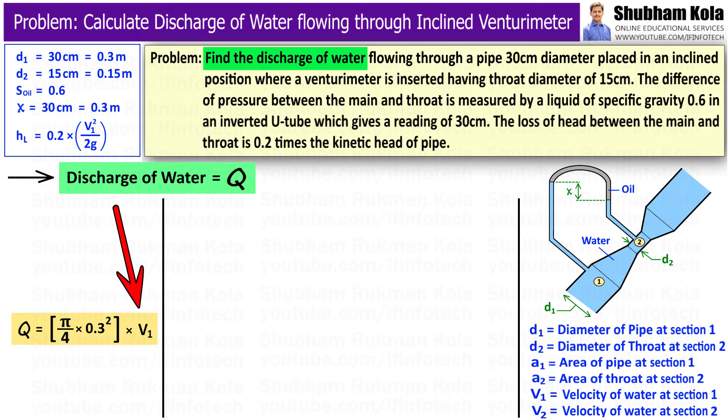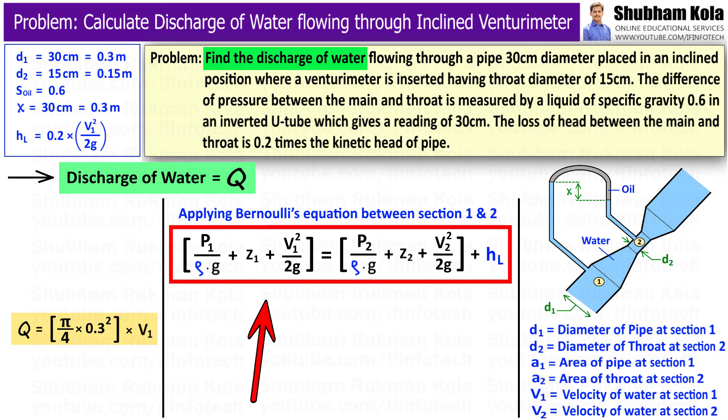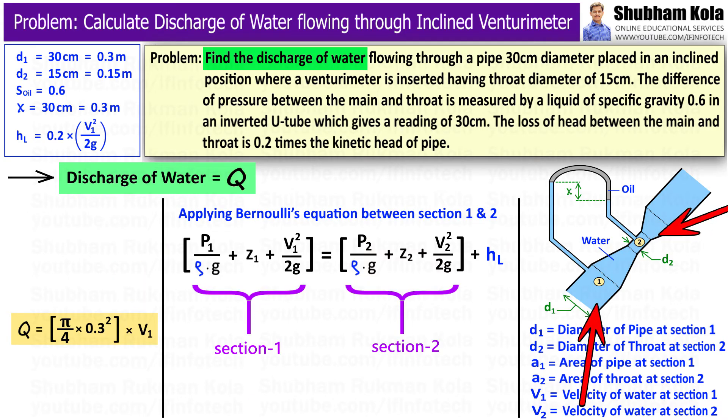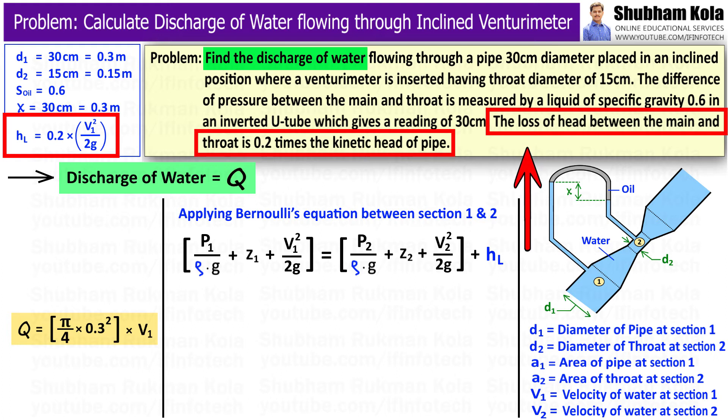v1 we can calculate by using Bernoulli's equation. Here we apply Bernoulli's equation between section 1 and 2 in order to calculate v1 value. We add HL, which is the loss of head between the main and throat, given as 0.2 v1 squared upon 2g.